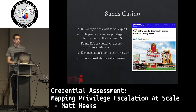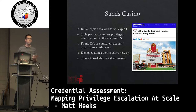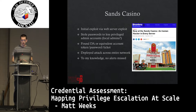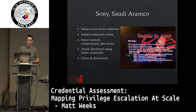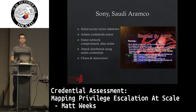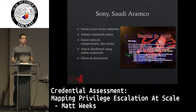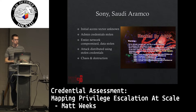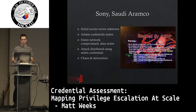So again: initial exploit via web server exploit, stole passwords locally, then found a privileged domain password, and deployed the attack across the entire network. In this case, there were no examples of missed alerts or a third party being granted access — but once again, the same thing happened. In Sony and Saudi Aramco, the attackers were also successful in wiping everything on the network. In both of these cases, it is not certain what the initial access vector was, but what is known is that the attackers used stolen admin credentials to again compromise the entire network, distribute an attack, and destroy a lot of data on thousands of systems.